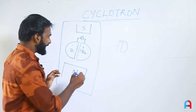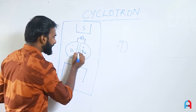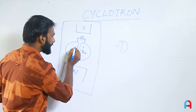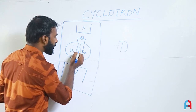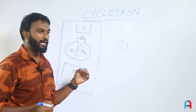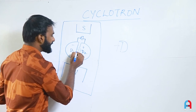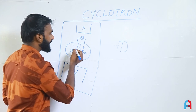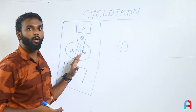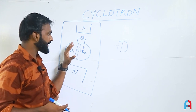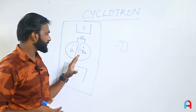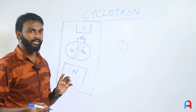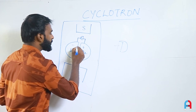The particle gets acceleration each time it crosses the gap between the Ds. Inside D1, it is again under the magnetic field only, so it follows a circular path. With each acceleration, the velocity increases slightly, so the radius of the circular path inside D1 is a little larger.